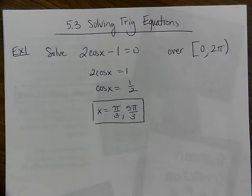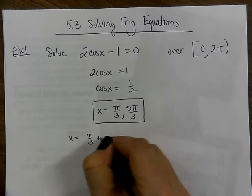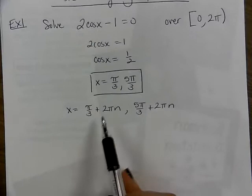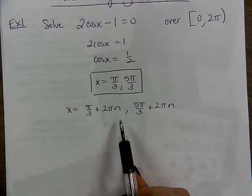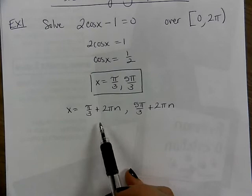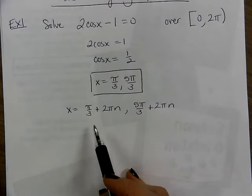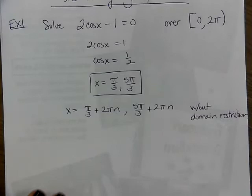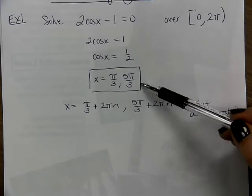The book is going to give a general solution with no domain restriction, like x equals π/3 plus 2πn and 5π/3 plus 2πn. Think about what that's saying — plugging in n = 1 just adds a full revolution, giving coterminal angles that keep repeating. That's the idea. But I do not want an answer like that. I want the restricted domain answer: π/3 and 5π/3.